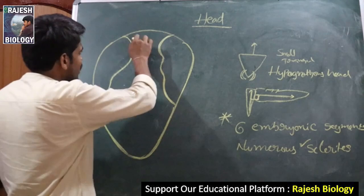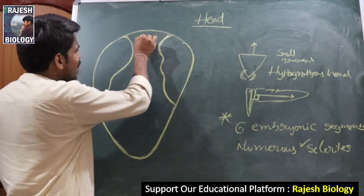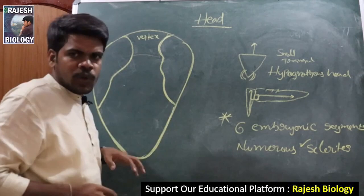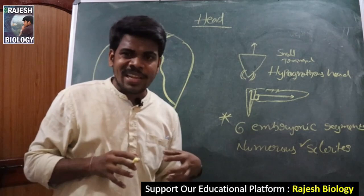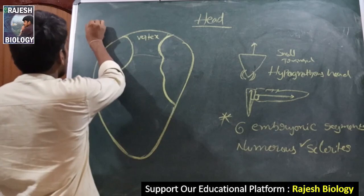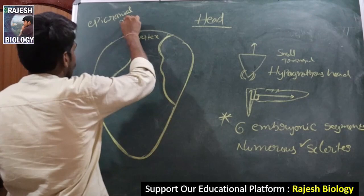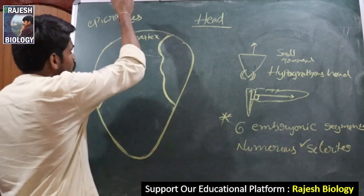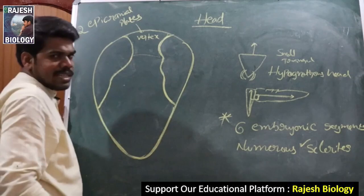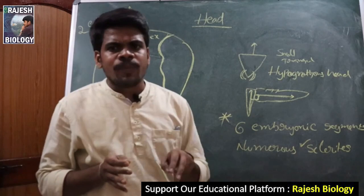The upper portion of the head is called the vertex. The upper or posterior portion of the head is called the vertex, and this vertex is called the epicranial plate. There are actually two epicranial plates, and these two epicranial plates together form the vertex.